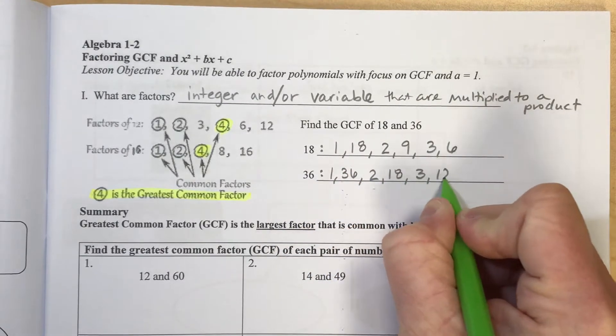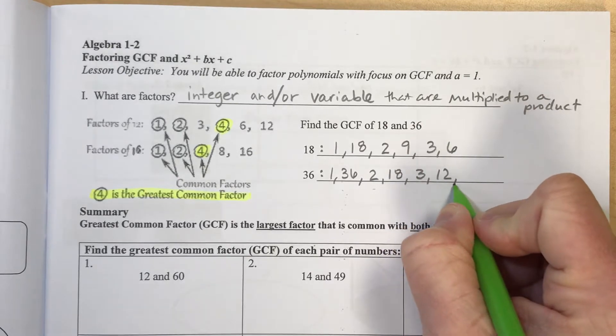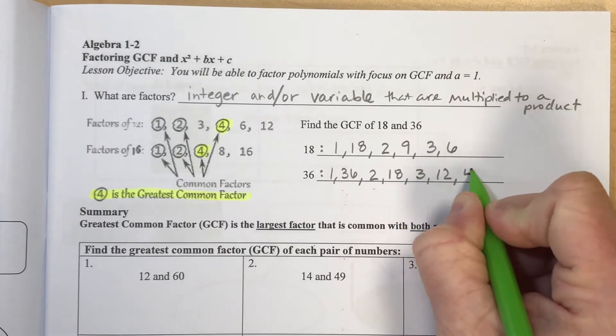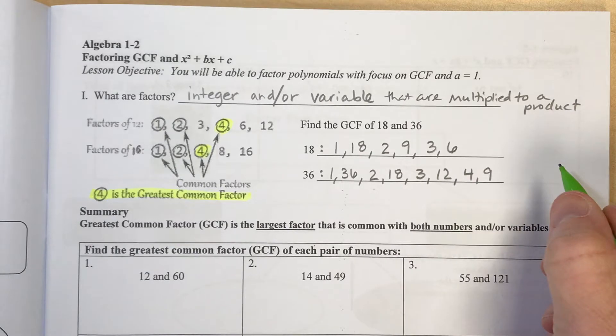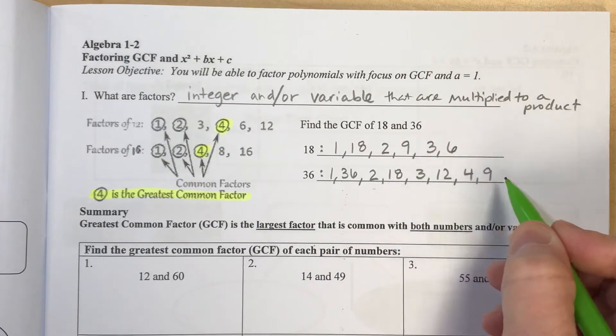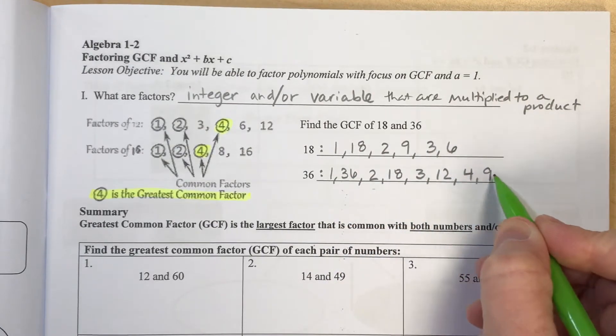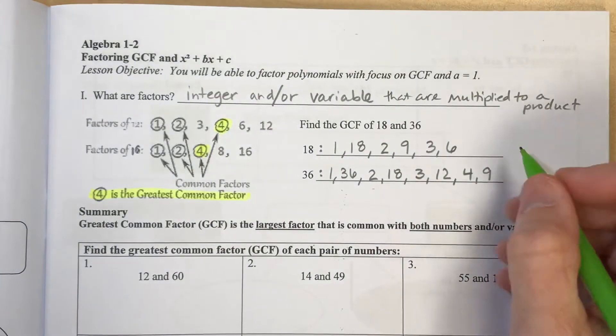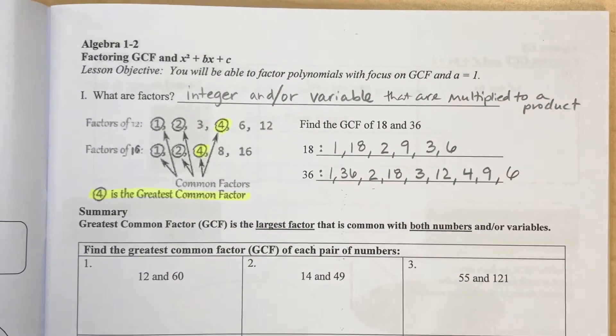3 and 12, 4 and 9. Let me think. Is there any more in there? I think that's all I can think of. Oh, 6 times 6. That multiplies to make 36.